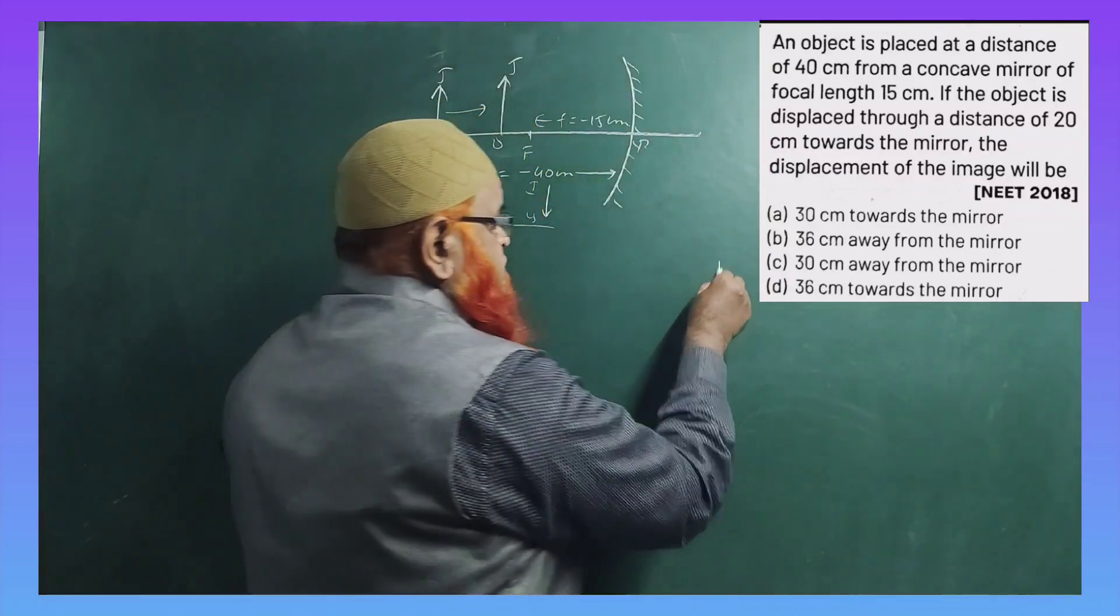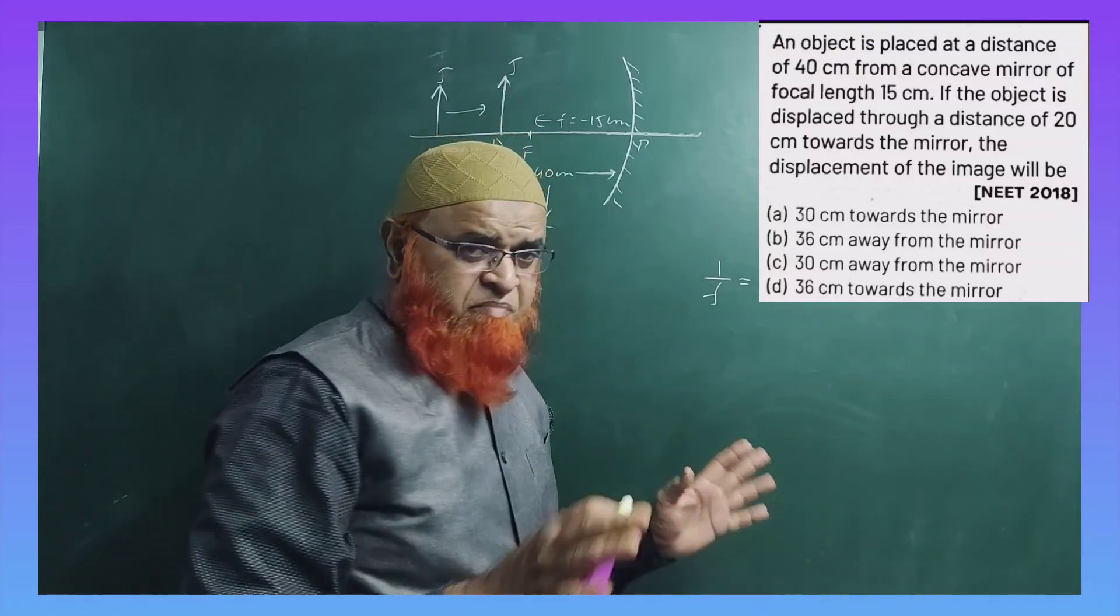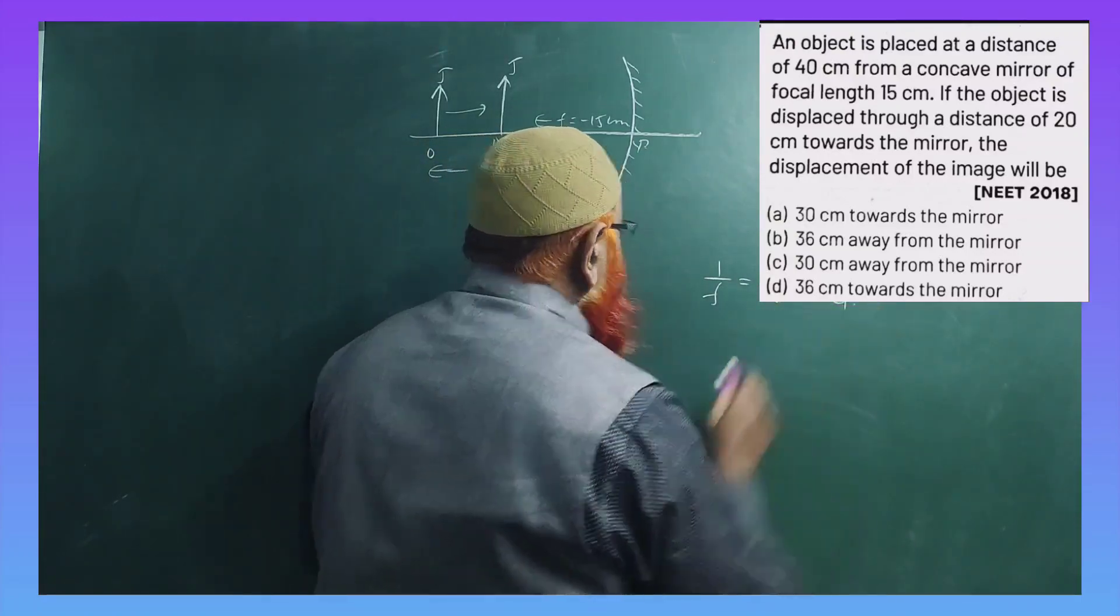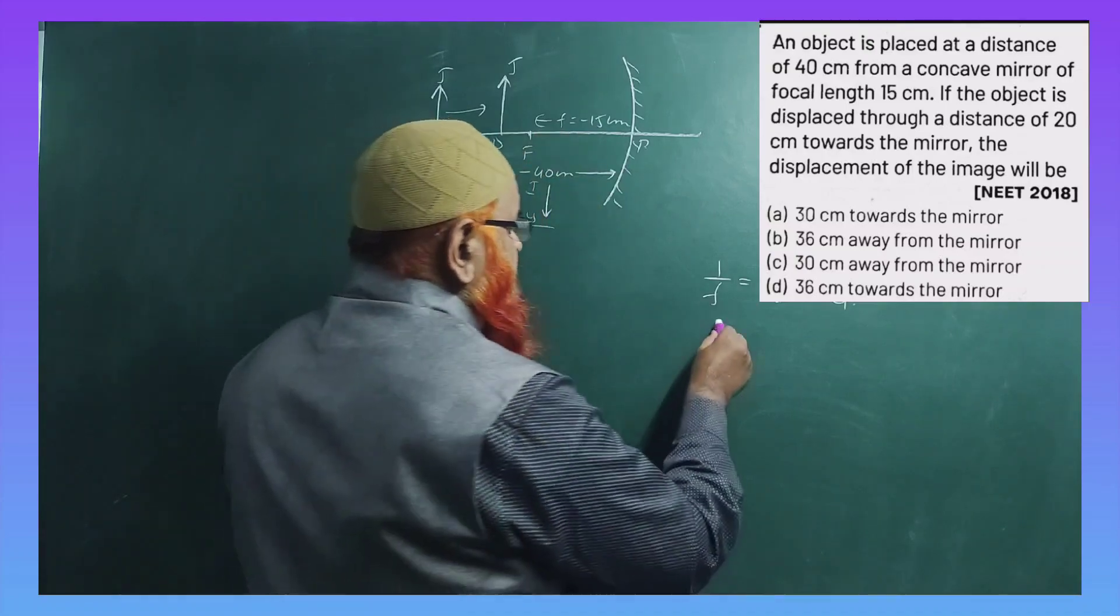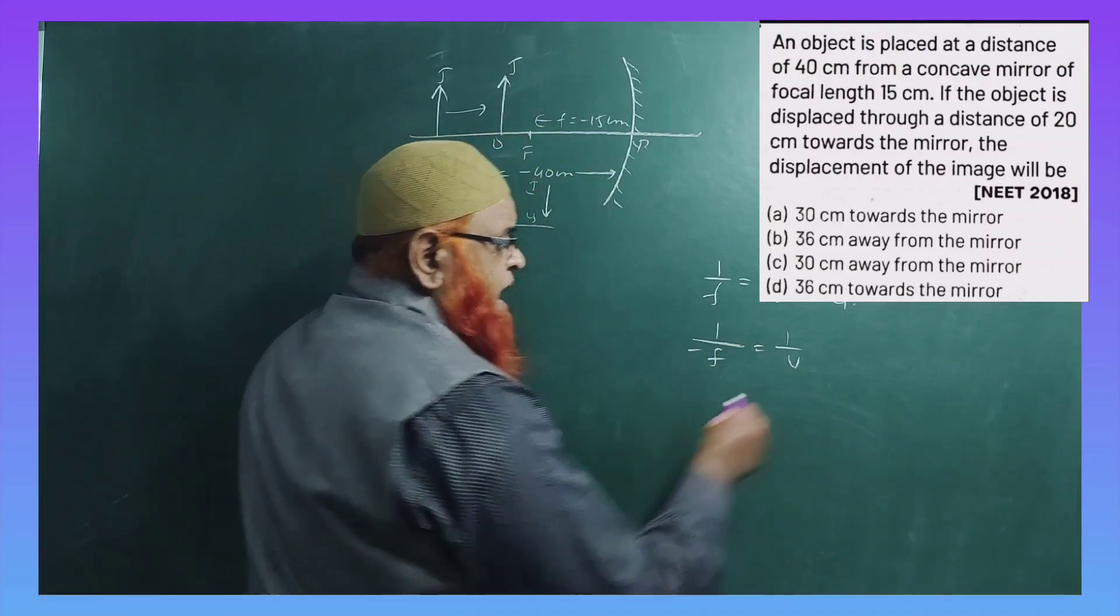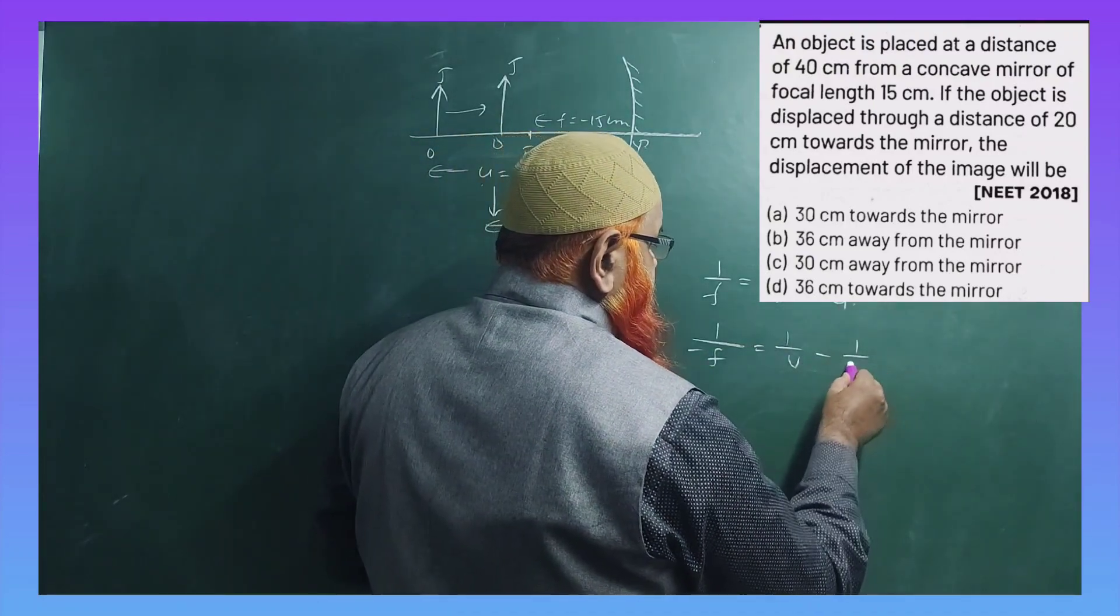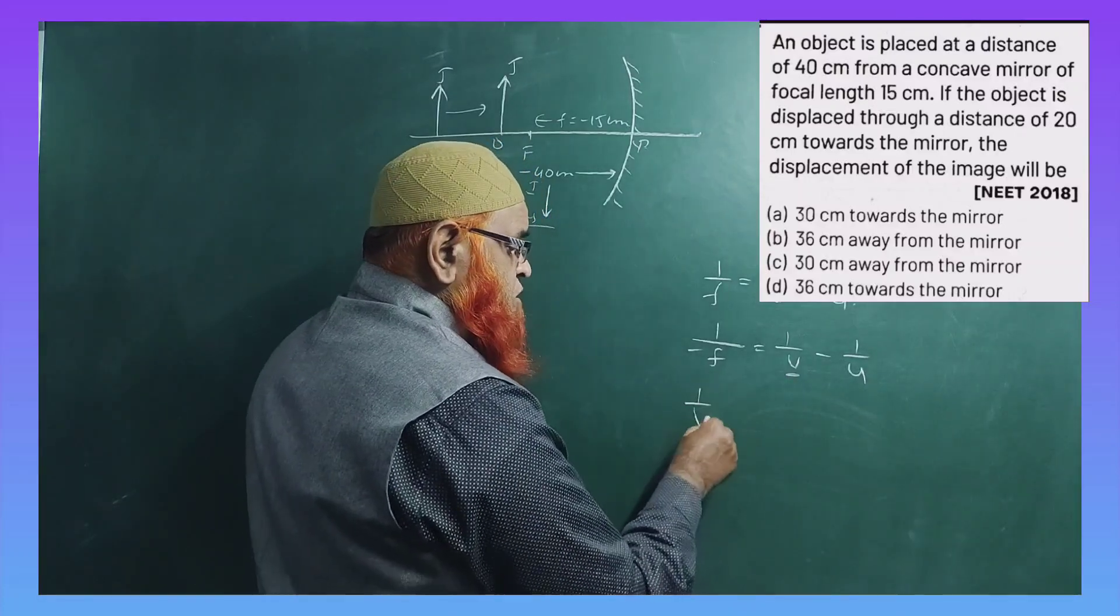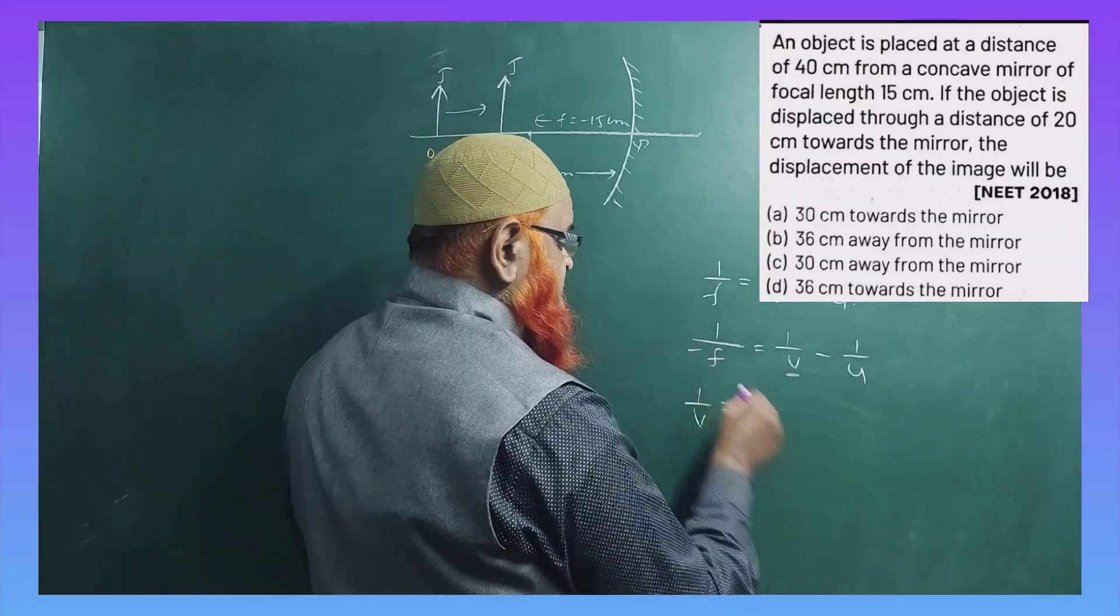I will give you a shortcut formula. First of all, you will write the basic formula of a mirror, that is 1/f = 1/v + 1/u. Anyhow, f is negative. I will take f as negative, that is minus f. So 1/v and u is also negative, I will take it as minus u. I have to find out what is v first of all. So 1/v I will shift this here.